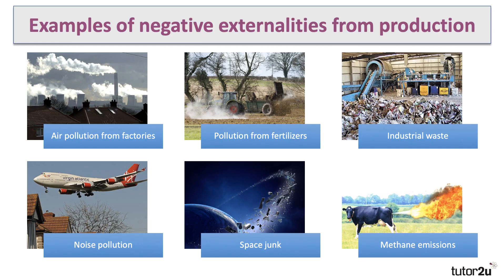Negative externalities occur when production — the supply of goods and services — imposes external costs on third parties. Those third parties are outside of the market and there's not necessarily any appropriate compensation paid. Examples include air pollution from factories, fertilisers from farming, waste emitted into the atmosphere or onto the ground from industrial production, space junk, and noise pollution from transport. In these cases, the social cost is higher than the private cost of production.